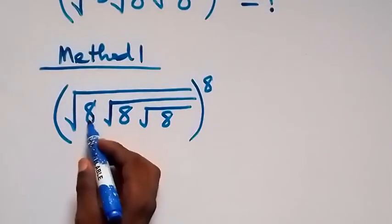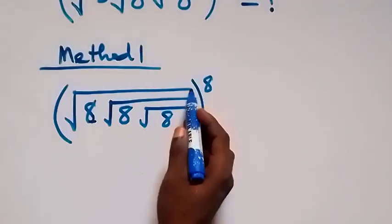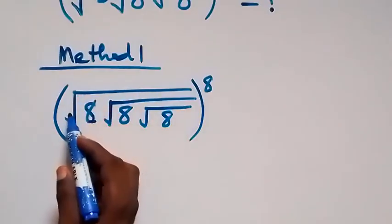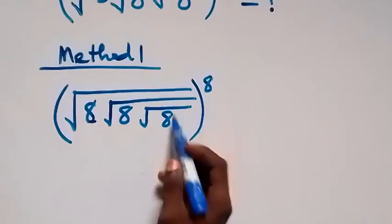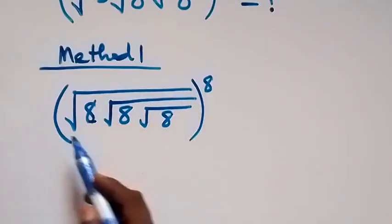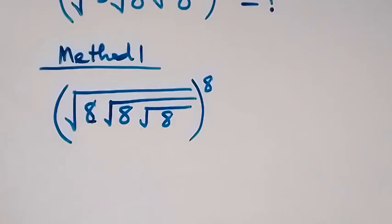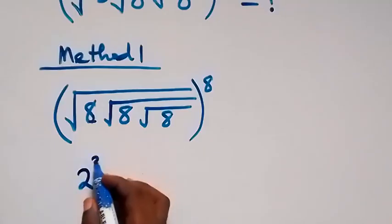From here we can rewrite this as square root of two raised to power three, since two raised to power three equals eight — that is two times two times two. These square roots we can take out as raised to power half, because the square root is affecting everything here, so it is the same as raised to power half. We can write this as two raised to power three.